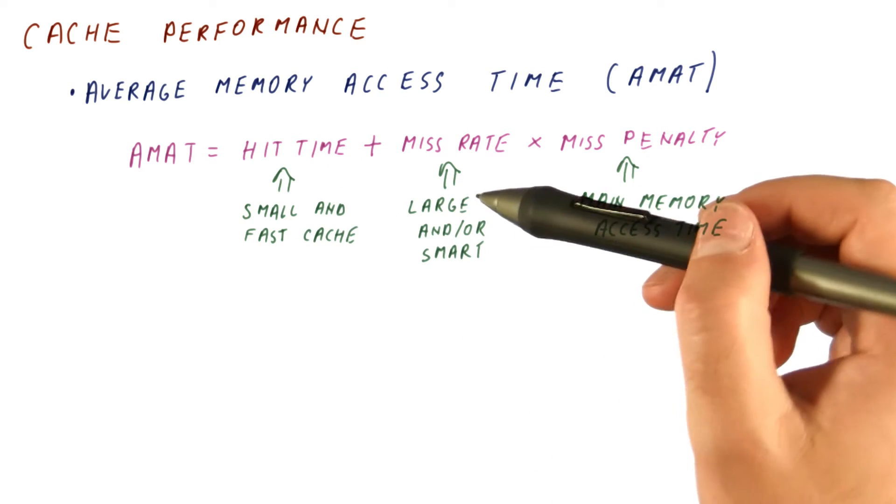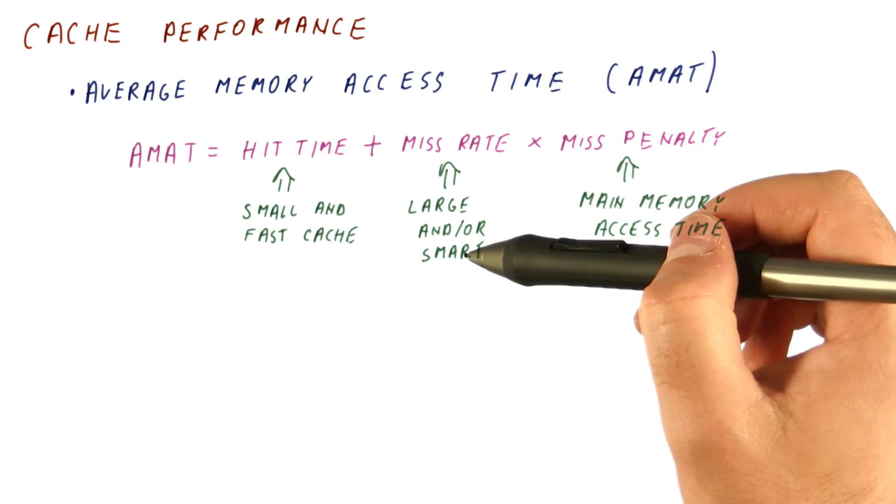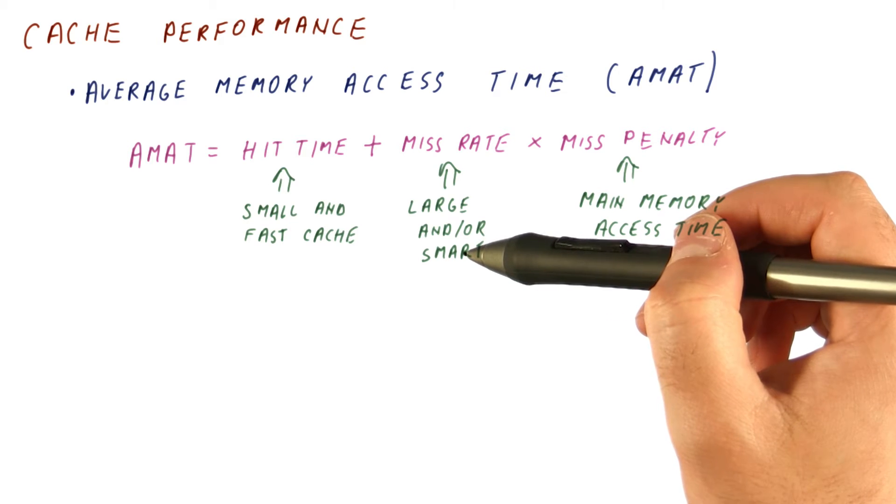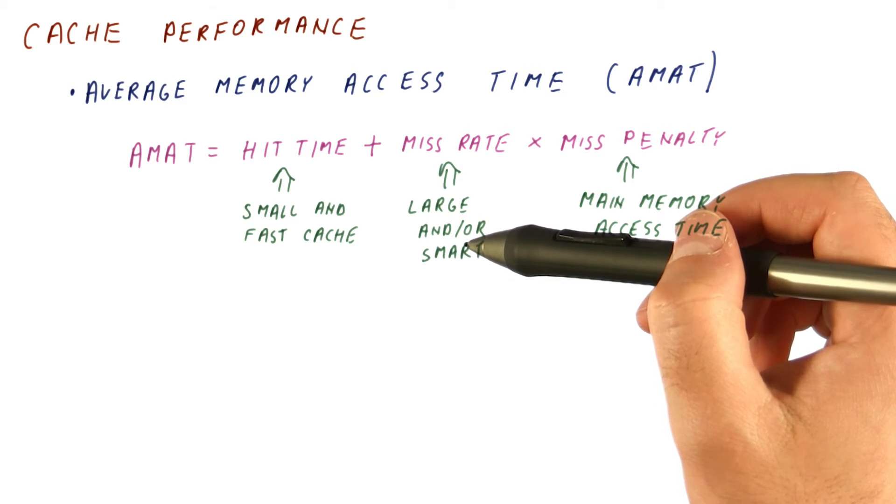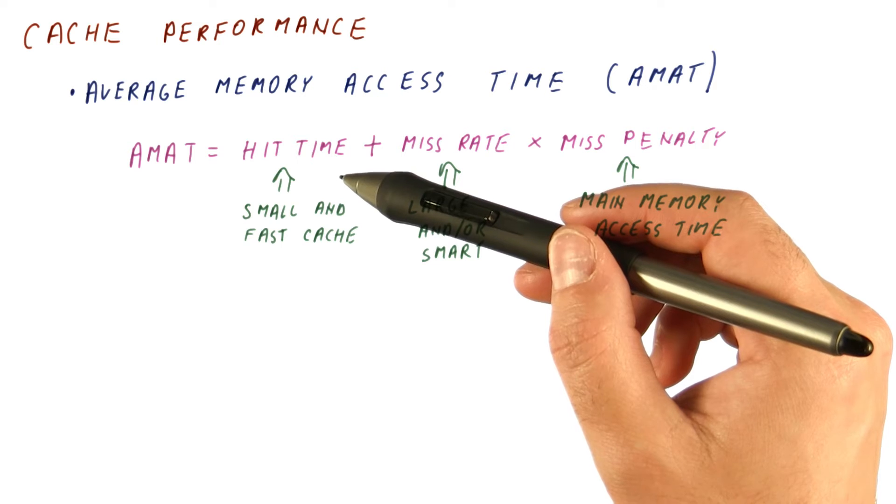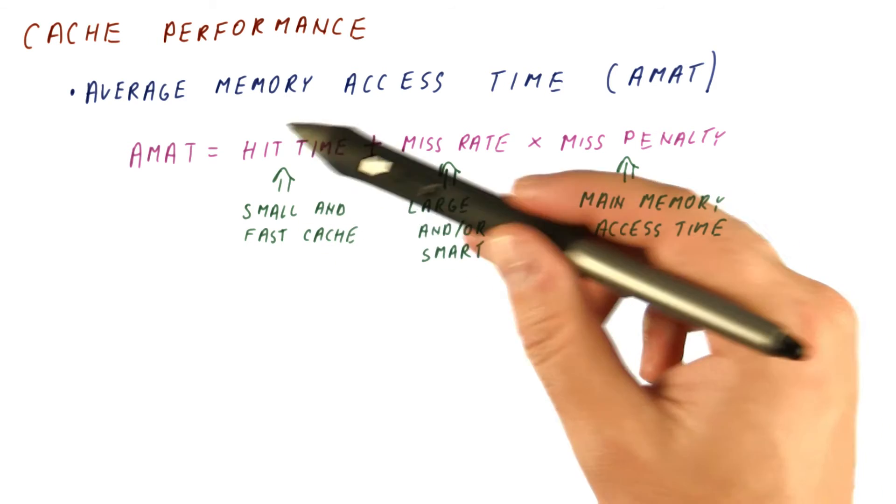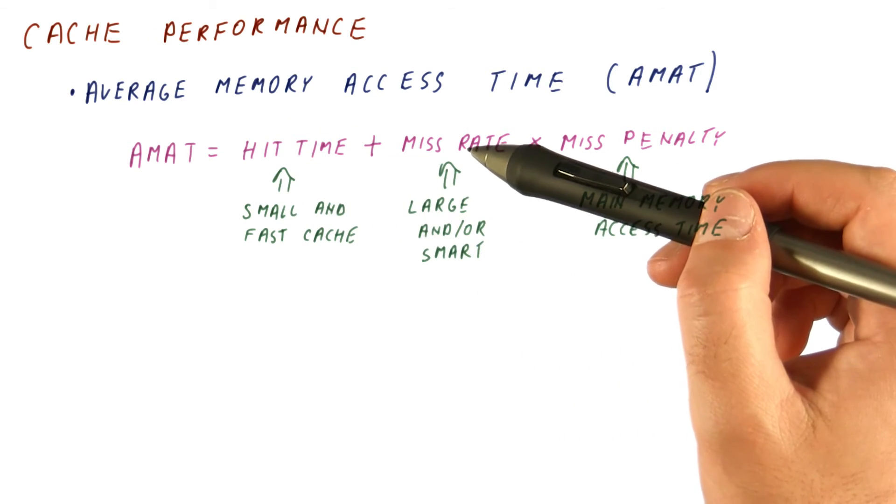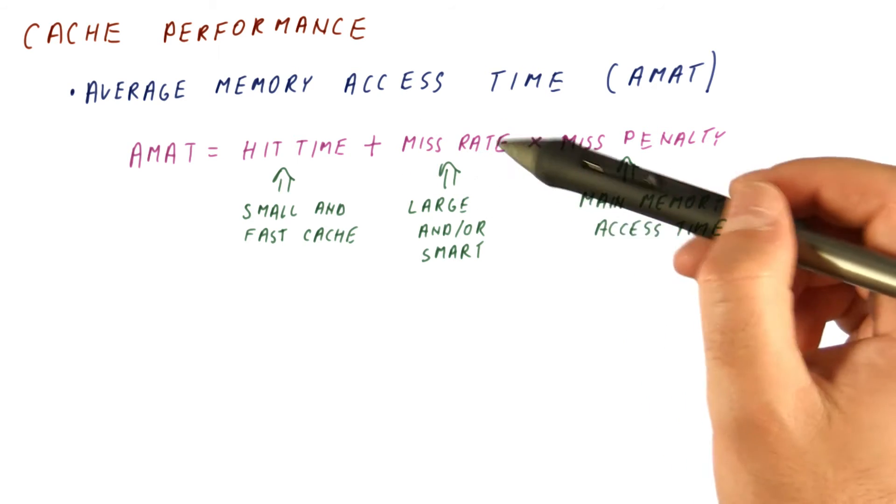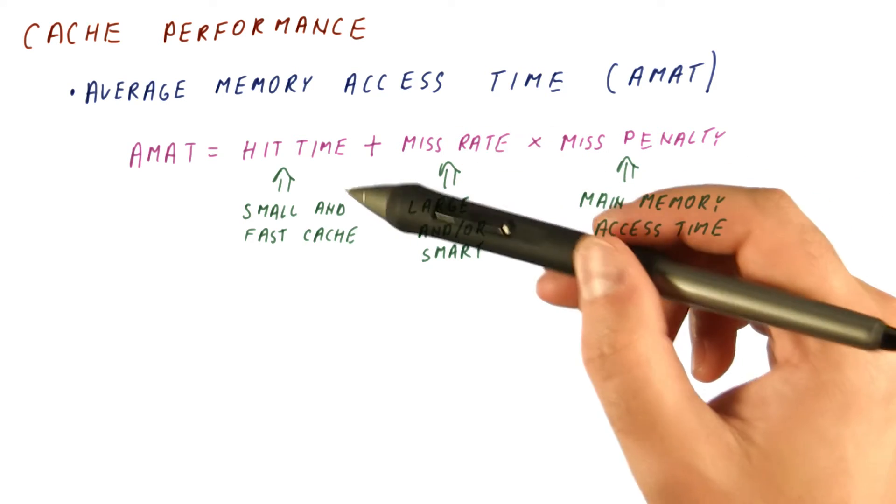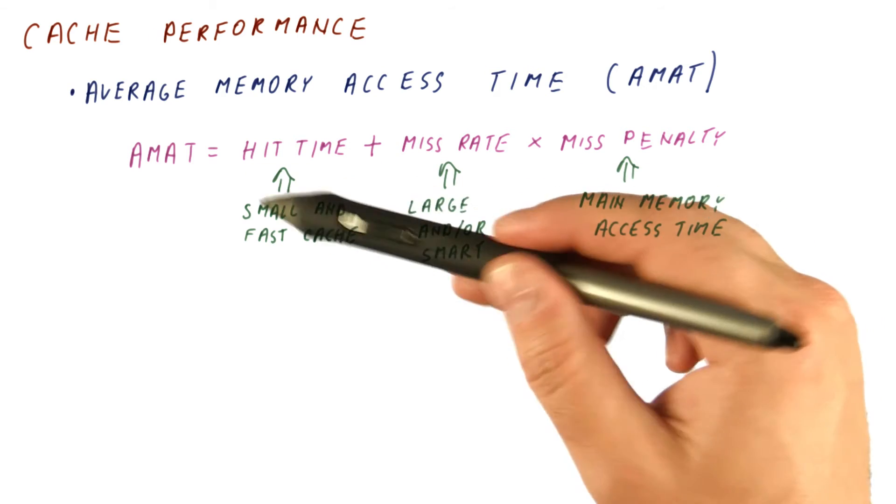Small and fast versus large and intelligent, and intelligent typically means slightly slower. So some caches can be extremely small and fast, have very good hit time, but sometimes that's at the expense of having a larger miss rate.